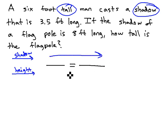This means the numerators will always be shadows, and the denominators will always be heights. It actually doesn't matter which order we label these. We could have put the height on top, and we'd end up with the same final result.